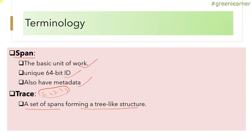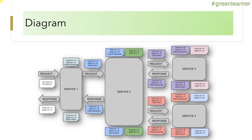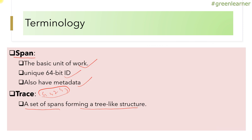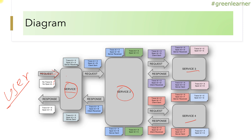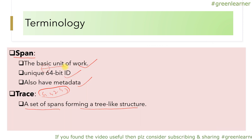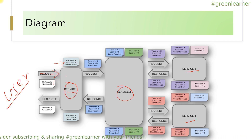We will understand this in more detail in the demo. This diagram is taken directly from the Spring Cloud Sleuth documentation. Here is service one, service two, three, and four. A request is generated and coming from the user. At this point it will have no span ID and no trace ID. When it starts processing, it will get span ID 'A' and trace ID 'X'.